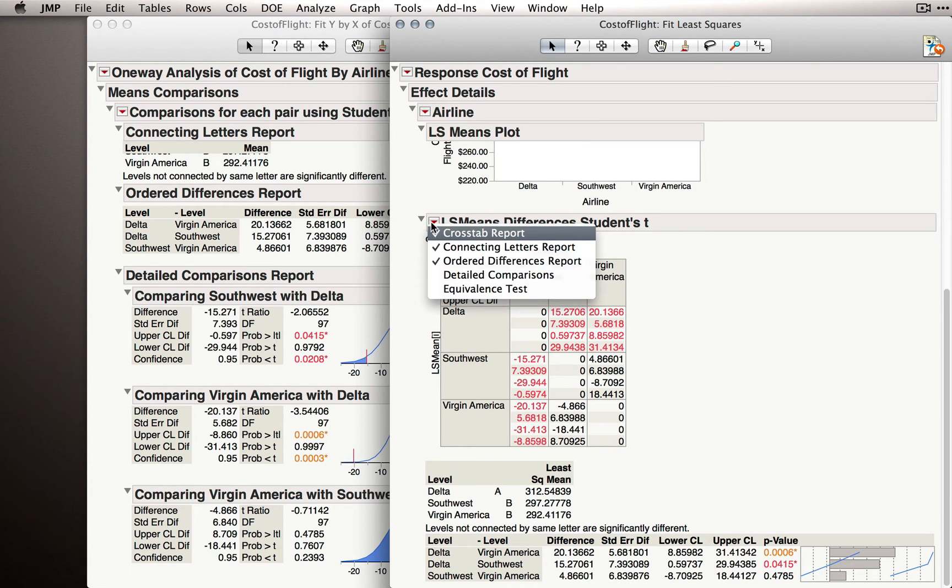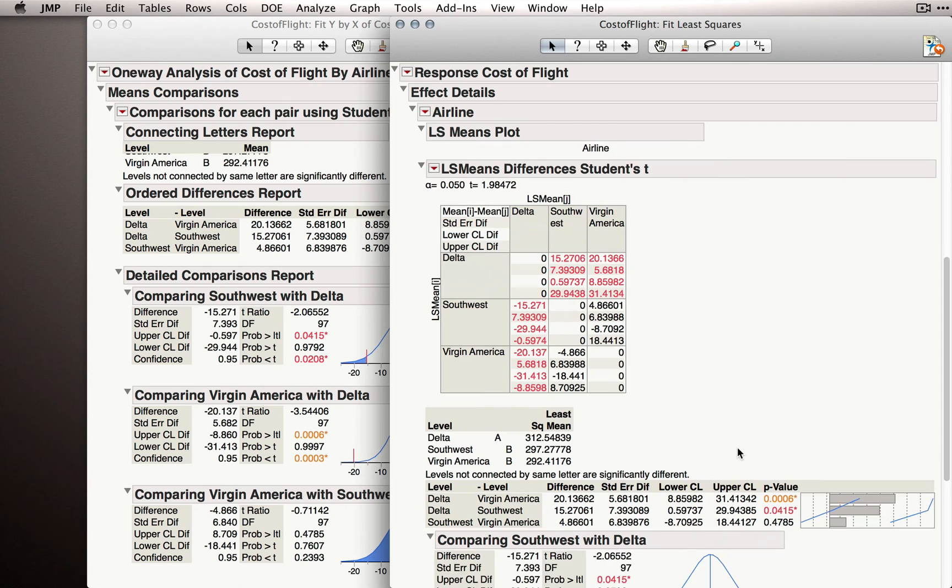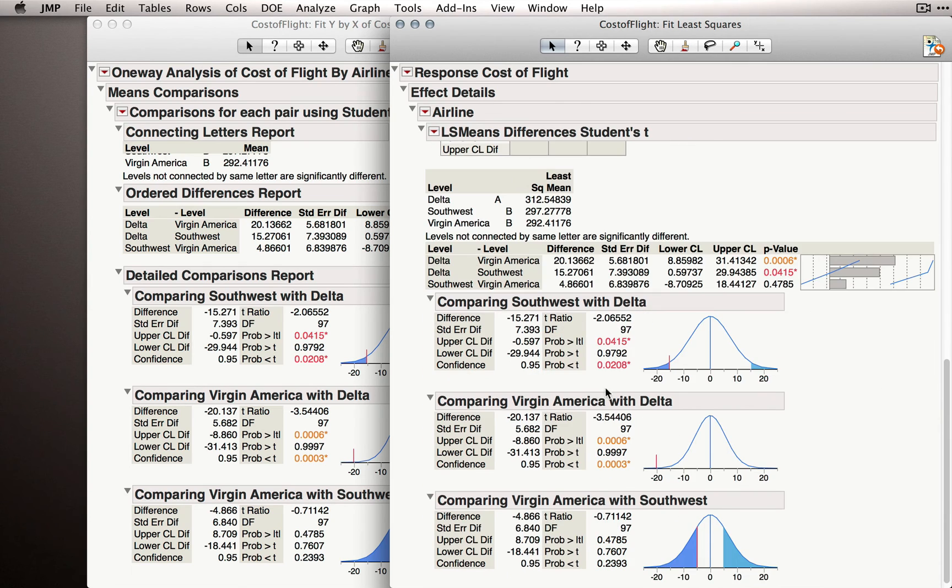Or, going to that red triangle, you select Detailed Comparisons. Detailed Comparisons is especially nice because you'll get all the output, including that t-ratio and some additional details.